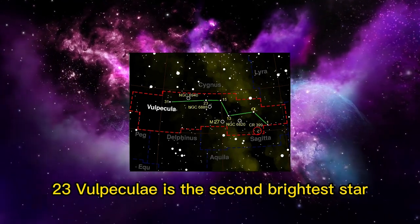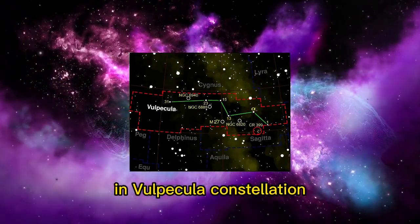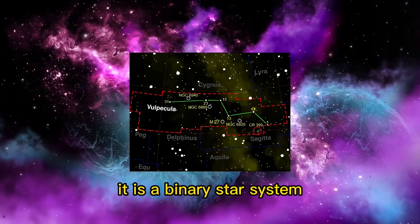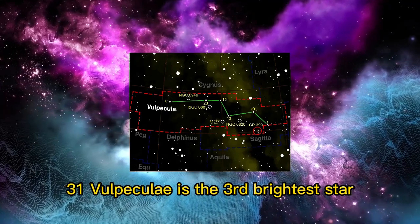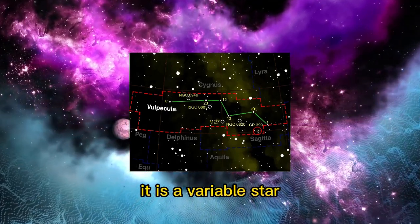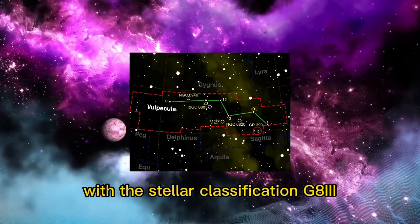23 Vulpeculae is the second brightest star in the constellation. It is a binary star system with stellar classification K2 III. 31 Vulpeculae is the third brightest star, a variable star with the stellar classification G8 III.